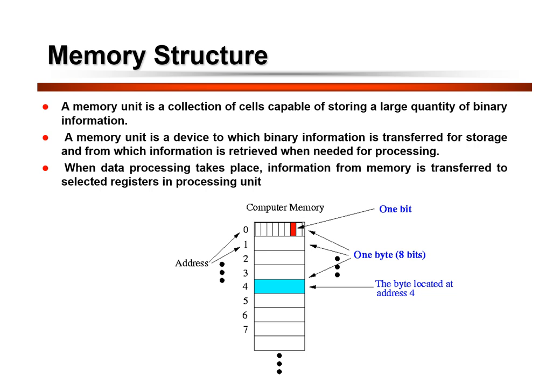The capacity of a memory unit is the total number of bytes that can be stored. This block diagram shows the memory unit. It has N address lines to address or access 2^N locations in the memory.